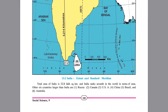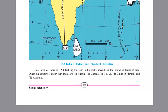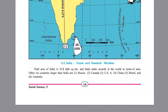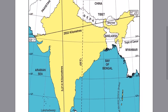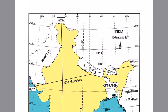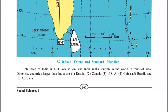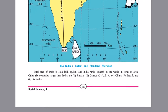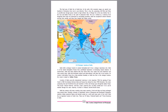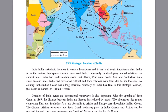The total area of India is 32.8 lakh square kilometers. India ranks 7th in the world in terms of area. Before India, there are 6 more countries — this can be asked as a one-mark or fill-in-the-blank question. The leading countries in the world by area are Russia, Canada, USA, China, Brazil, and Australia.